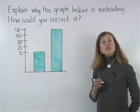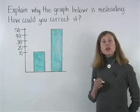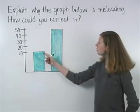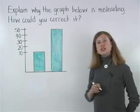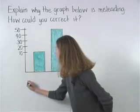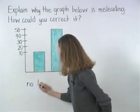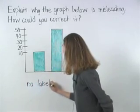This is a good example of a misleading graph. First, notice that we know that the first bar is 10 and the second bar is 50. However, there are no labels on the horizontal or vertical axis, so we don't know what the bars represent.